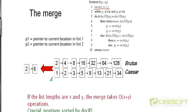Initially, both P1 and P2 point to the first element of their respective lists. In each step, we check if the doc ID that P1 is pointing to equals the doc ID that P2 is pointing to. If yes, that document contains both terms, so we append that doc ID to the answer list, then increment both P1 and P2 to point to the next elements in their respective lists.